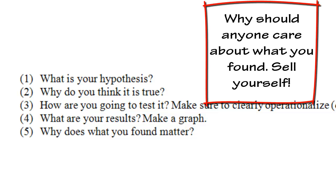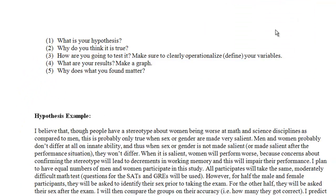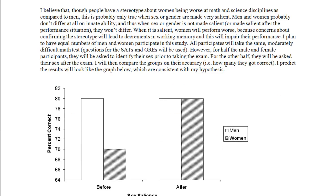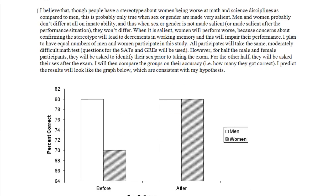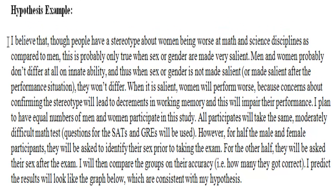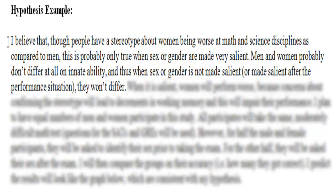If we look at our hypothesis example down below, we can see the following. The hypothesis starts off with, I believe that though people have a stereotype about women being worse at math and science disciplines as compared to men, this is probably only true when sex or gender are made very salient. Salient means when you're aware of one's sex or gender. Men and women probably don't differ at all on innate ability, and thus when sex or gender is not made salient or made salient after the performance situation, they won't differ at all. So this first section here is my hypothesis.